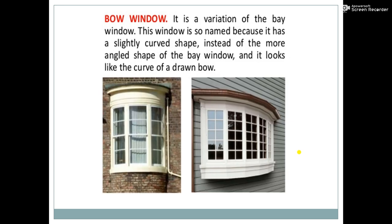The bow window is a variation of the bay window. It is so named because it has a slightly curved shape instead of the more angled shape of the bay window, and it looks like the curve of a drawn bow. Bay and bow windows serve the same purposes. The only difference is the shape: the bay window has many angles while the bow window has one curved portion. Both provide light, ventilation, and a natural view of the outside.